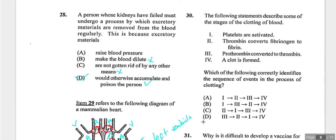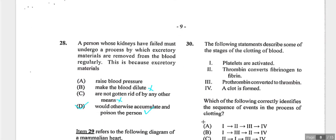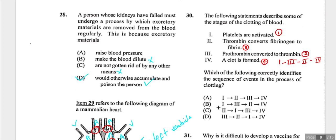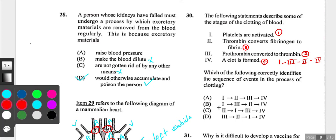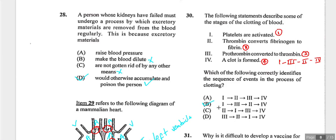Question thirty provides statements about stages of blood clotting and asks for the correct sequence. Working through the list: platelets are activated first, followed by steps three and two. The sequence is one, three, two. Answer is B. As always, figure out the sequence from the list before looking at the options.